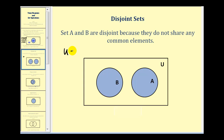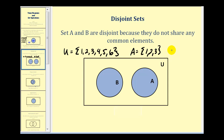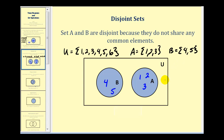So here if the universal set was the set containing one, two, three, four, five, six, and set A contains the elements one, two, three, then set B would not be able to contain one, two, or three, but it would have to contain elements within the universal set. So maybe B would contain four and five. For the Venn diagram, one, two, and three would be inside set A, four and five would be inside set B, and six would be outside both circles.